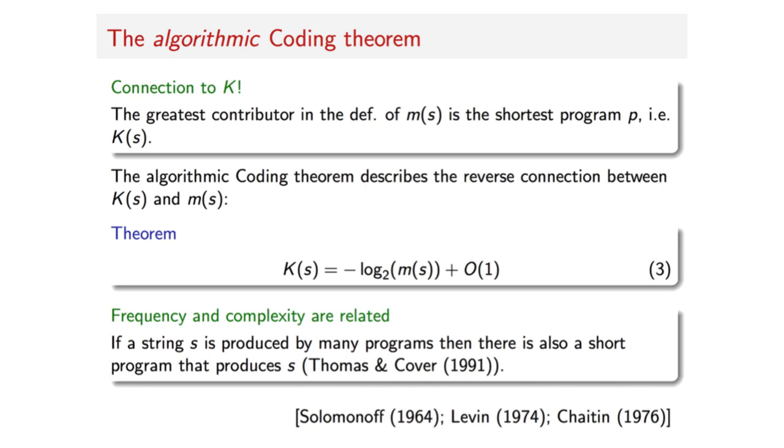The implications in the real world of areas such as algorithmic probability are very broad and fascinating if one allows some speculation. For example, according to classical mechanics, the world may be an unfolding algorithmic process.